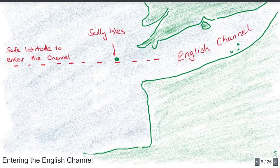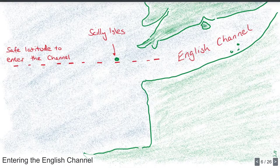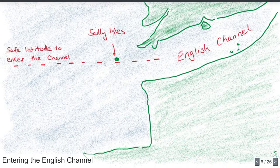Let me show you a map of the English Channel. Here's England, the Isle of Wight, the southern part of Wales, a simplified France and Spain, and here are the Scilly Isles — rocky islands off the coast of Cornwall. These days it's called Lizard Point, but in the 1700s they called it the Lizard. This red dotted line is what Edmund Halley reckoned was the safe latitude to enter the Channel — any further north and you ran a risk of running into the Scilly Isles and the Lizard.